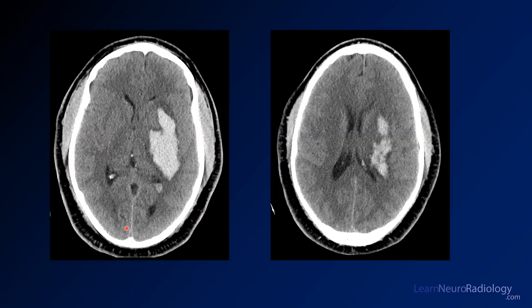Here you see the CT images. There's a hemorrhage centered in the left basal ganglia and thalamus, dissecting along, with some blood in the left lateral ventricle — so it has dissected into the ventricle a little bit. That's relatively common for these kinds of cases.